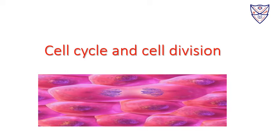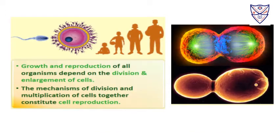Hello students, let us start with the next chapter of 11th standard, that is cell cycle and cell division. We all know that growth and reproduction of all organisms depends on the division and enlargement of cells. The mechanism of division and multiplication of cells together form cell reproduction. It is the life period of a cell during which a cell synthesizes DNA, replicates DNA, grows, and divides into two daughter cells. This is what we call the cell cycle.